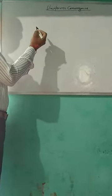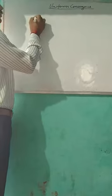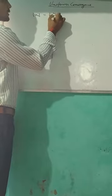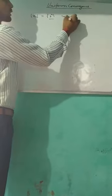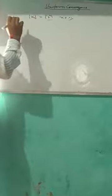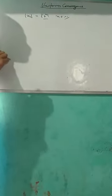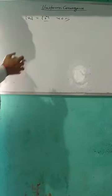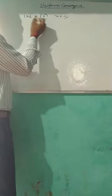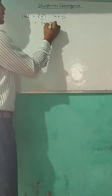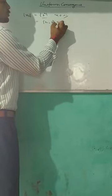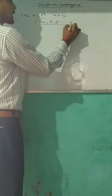Suppose we know about the sequence. Suppose xn is a sequence equal to 2 to the power n, where n belongs to the natural numbers. A sequence is just a function whose domain is a set of natural numbers and co-domain is a set of any numbers. For example, when you put n equal to 1 we get 2, when n equal to 2 we get 2 to the power 2, then 2 to the power 3, and so on. These are all real numbers.